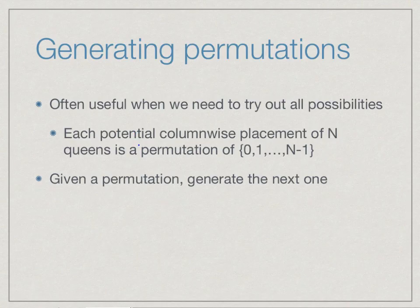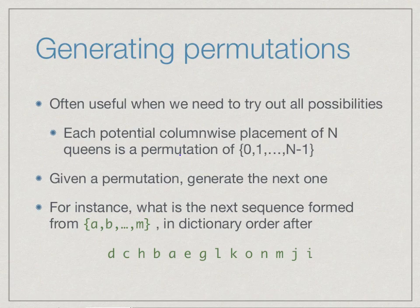One way of solving a problem like eight queens is actually to generate all permutations and keep trying them one at a time. This gives rise to the following question: if we have a permutation of 0 to n-1, how do we generate the next permutation? Suppose we have the letters a to m, the first 13 letters of the alphabet, and we treat the dictionary order of words as the ordering. Here is a rearrangement of a to m in some order. What is the next rearrangement immediately after this in dictionary order?